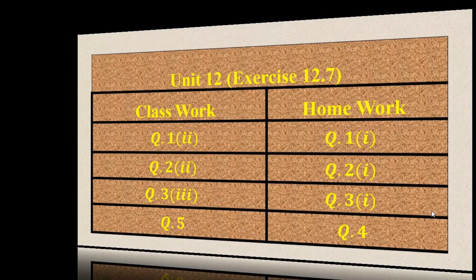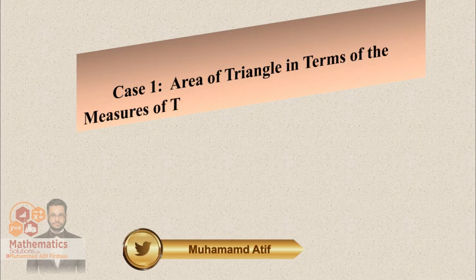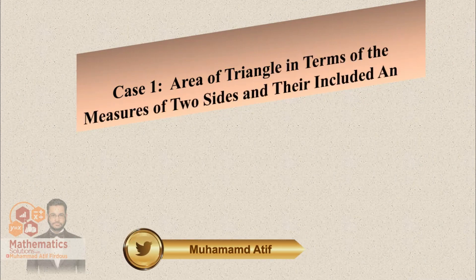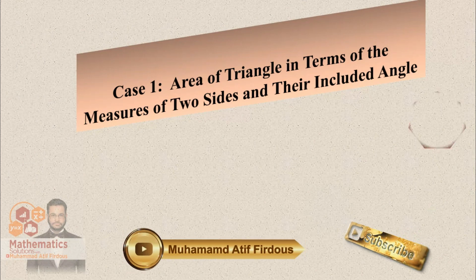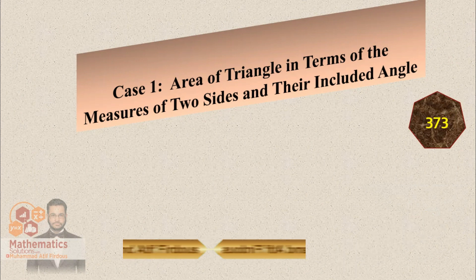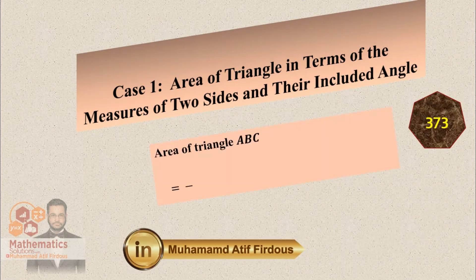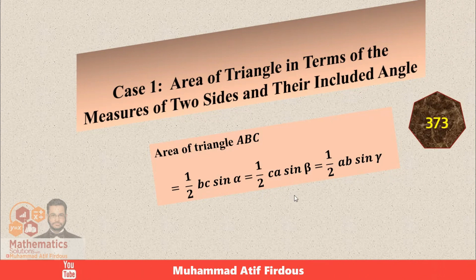The first formula we will use this semester is on page 373. Case 1: area of a triangle in terms of measures of two sides and their included angle. The formula is: area of a triangle equals one-half BC sine alpha, or one-half CA sine beta, or one-half AB sine gamma.